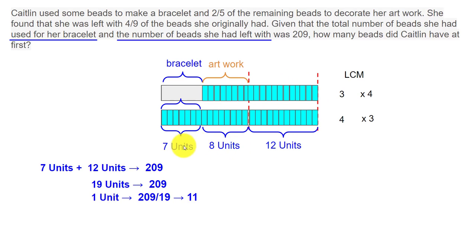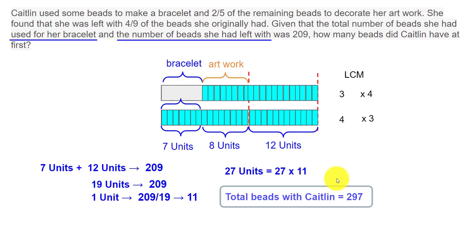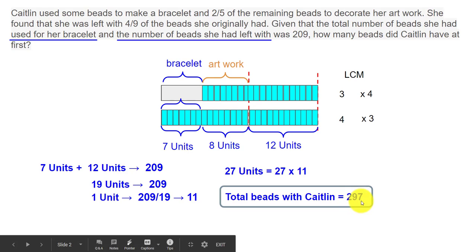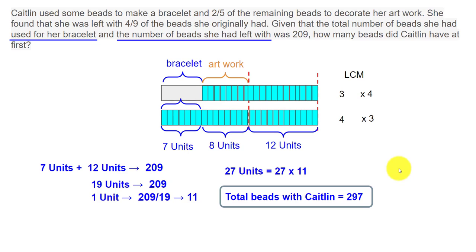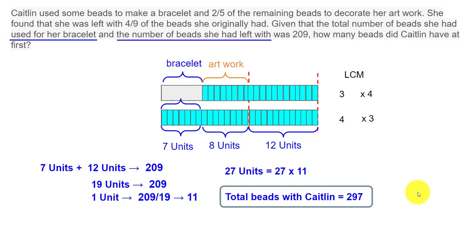How many beads did Caitlin have at first? At first she had all of these, so that means seven plus eight plus 12, which is 27 units. Each unit represents 11 beads, so 27 units times 11 equals 297 beads. The total number of beads Caitlin had at first was 297 beads.